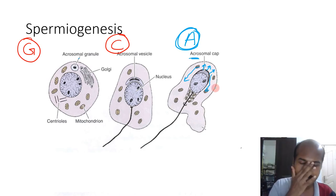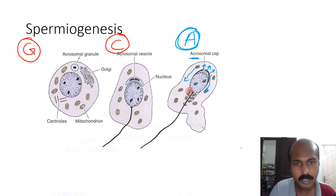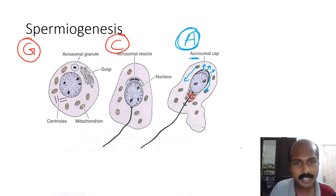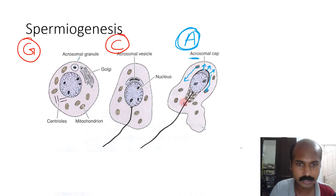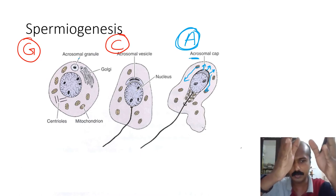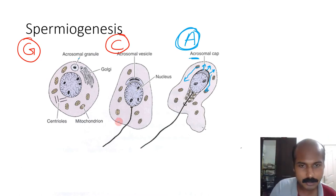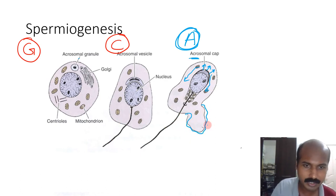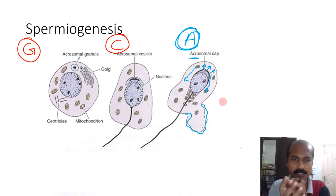At the posterior pole, there is enormous assembly of the axonemal complex tail, and mitochondria begin arranging around it. The cytoplasm slowly clumps into a blob-like body as the nucleus and acrosome migrate anteriorly.